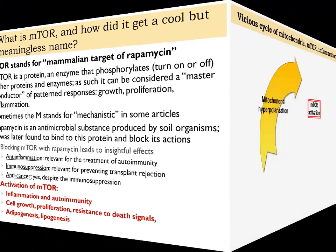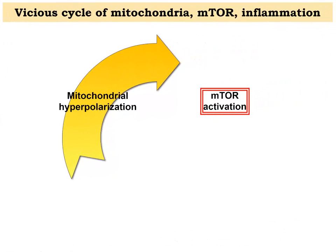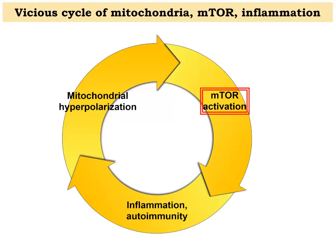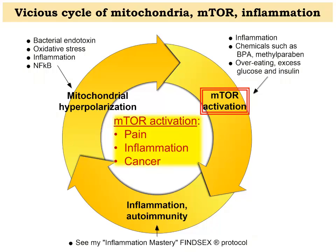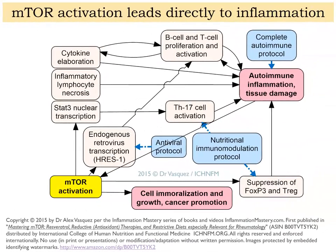In graphic format: mitochondrial hyperpolarization is one trigger of mTOR activation. Once mTOR is activated it promotes inflammation, which triggers more mitochondrial hyperpolarization — a vicious cycle. Triggers of mitochondrial hyperpolarization include bacterial endotoxin, oxidative stress especially nitric oxide, inflammation, and NF-κB activation. mTOR activation can also occur directly from inflammation, chemicals, and signals indicating nutrient excess such as hyperglycemia and hyperinsulinemia.